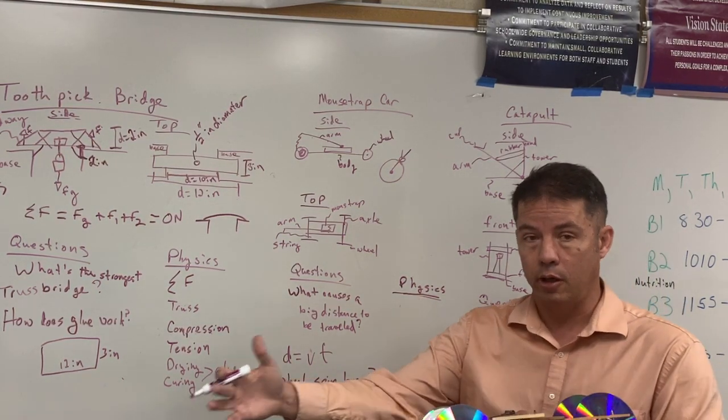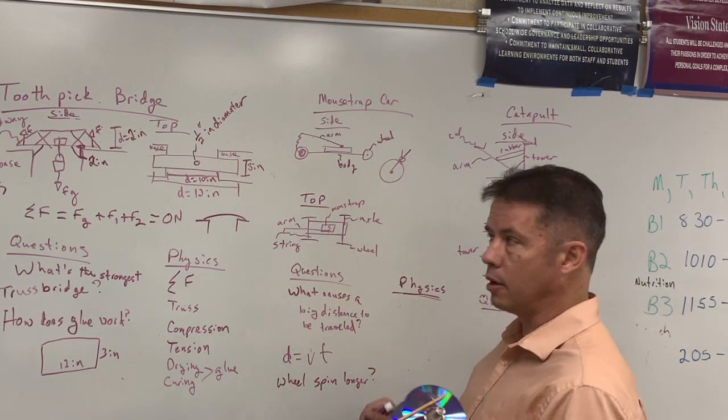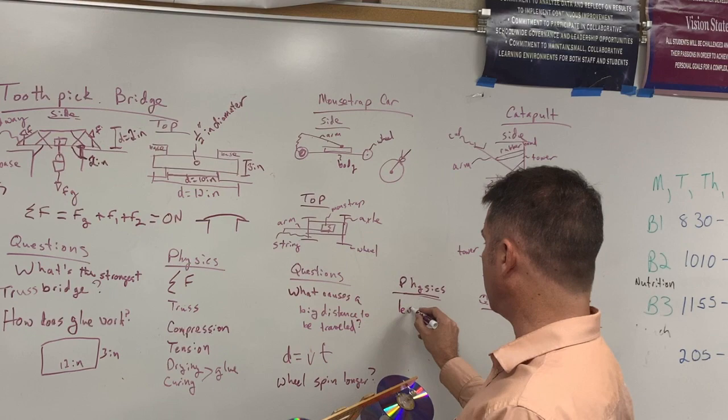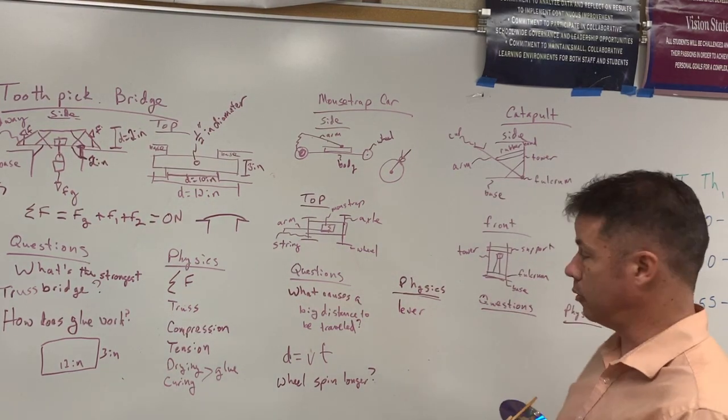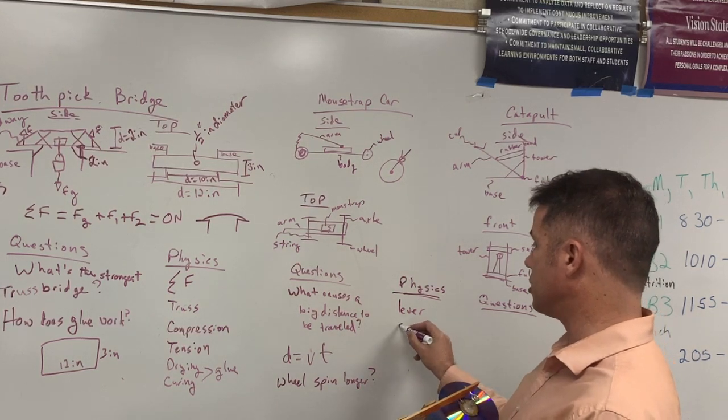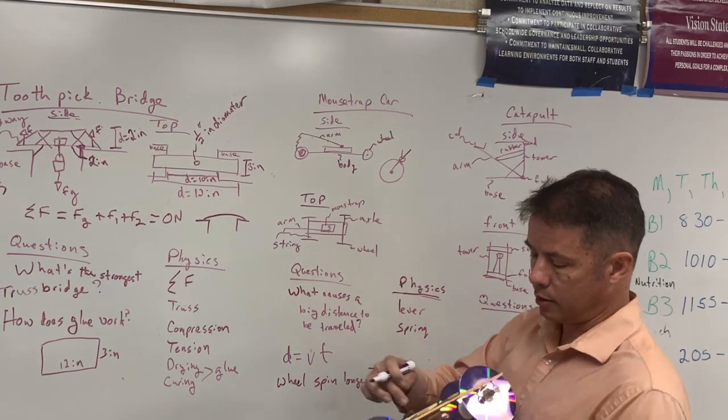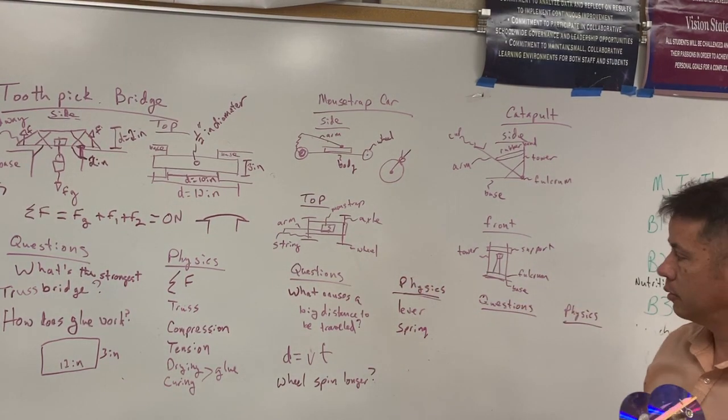A longer arm. So a longer arm, this arm is called a lever, so that might be something we're looking at. We might also be looking at springs, because it's all connected to the spring that's inside the mousetrap.